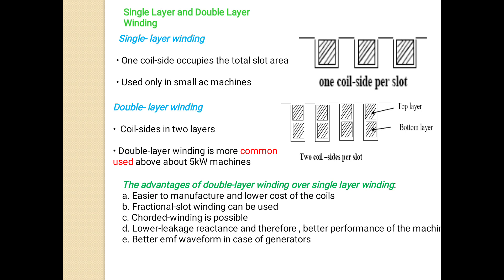The advantages of double layer winding over single layer winding include: easier to manufacture and lower cost of coils, fractional slot winding is possible, lower leakage reactance, therefore better machine performance, and better EMF waveform in the case of a generator.